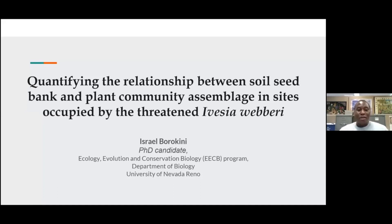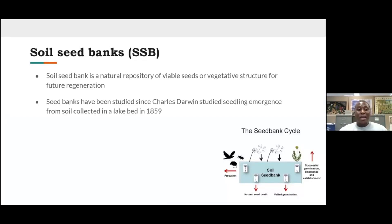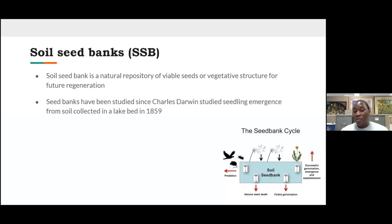Today I'll be talking about quantifying the relationship between the soil seed bank and plant community assembly in sites occupied by the threatened Ivesia weberi. The soil seed bank is a natural repository of viable seeds and vegetative structures for future generations, and it has been an important part of ecological studies since Charles Darwin did studies on seedling emergence in his backyard in 1859, published in one of his papers.